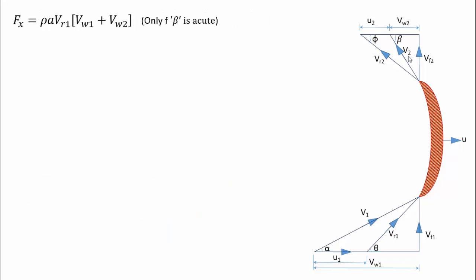This equation is valid only if the vane angle at the outlet, β, is acute. If the angle β is 90 degrees, the Vw2 becomes zero, and the equation becomes Fx = ρ·A·Vr1·Vw1.